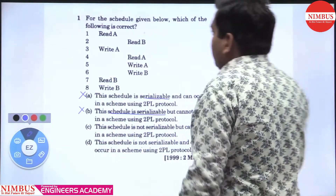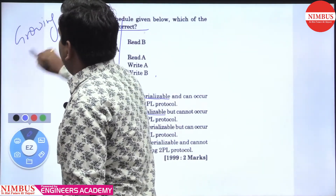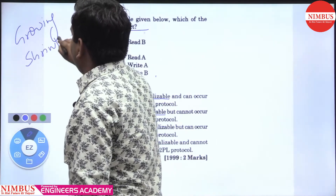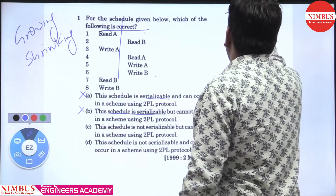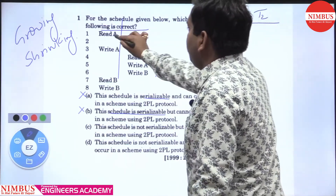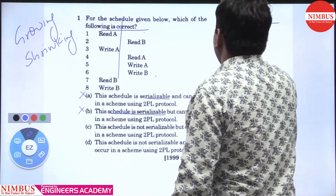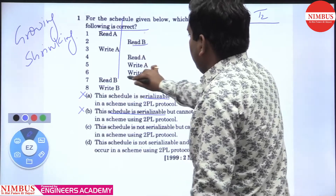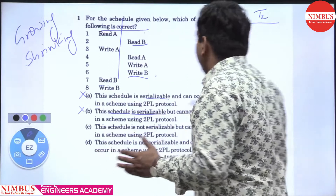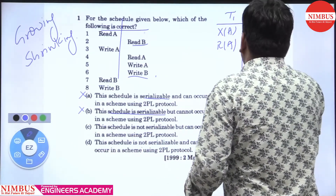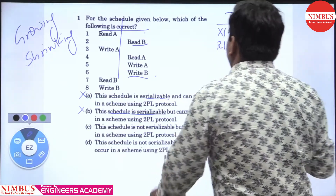The 2PL protocol says: complete the growing phase, then the shrinking phase. First, we take the growing phase. We take an exclusive lock on A, then read A. We also take an exclusive lock on B — why exclusive lock? Because we have to perform a write operation. So exclusive lock on B, then read B, then write A.